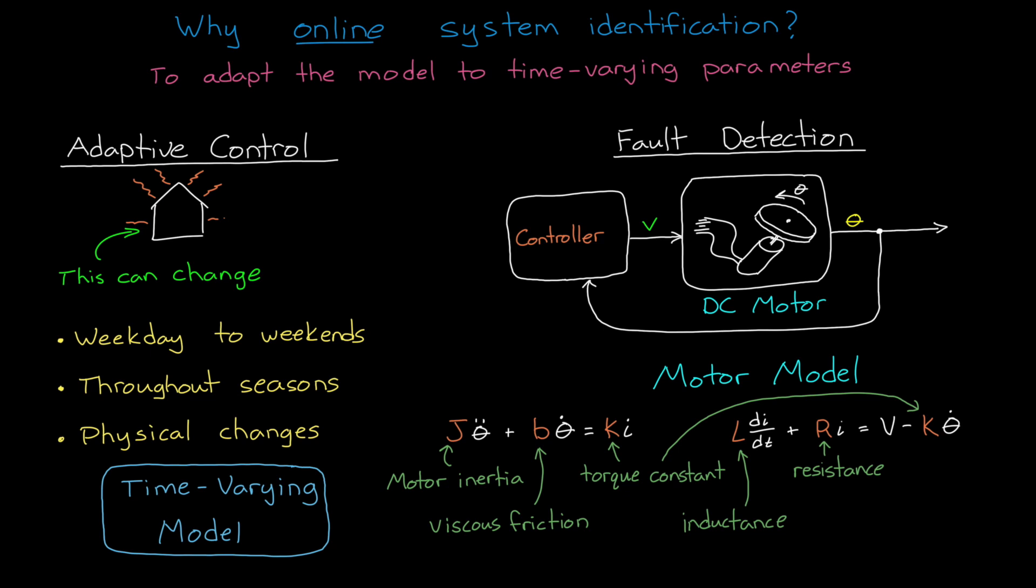Now, instead of tracking current and trying to figure out some complex fault condition, we can just check if the friction constant is larger than some maximum threshold. No matter what speed we're running the motor or how it's accelerating, we have a direct estimate of the parameter that we care about.